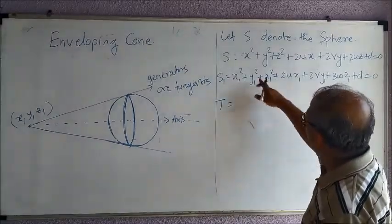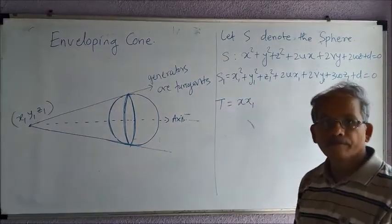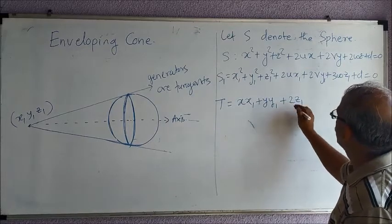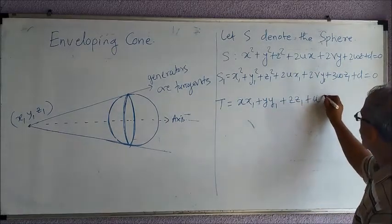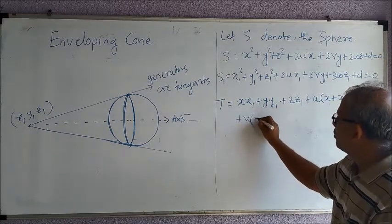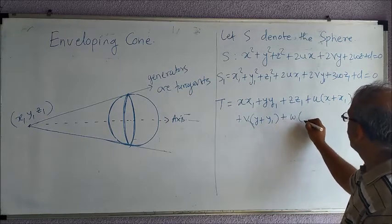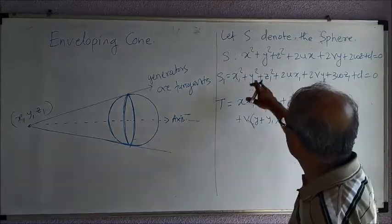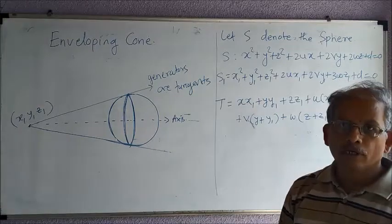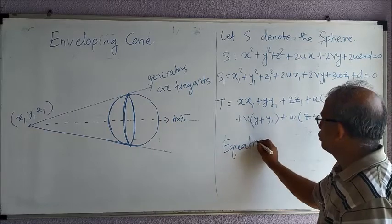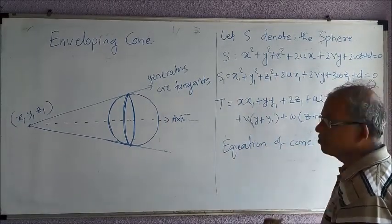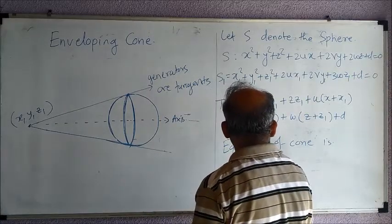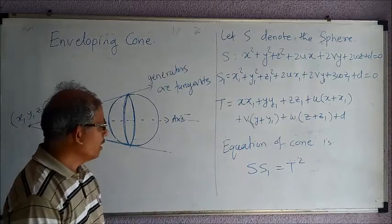Then we find T, the equation of the tangent plane. In place of x², write x·x1; in place of y², write y·y1; in place of z², write z·z1. Then plus u(x + x1) + v(y + y1) + w(z + z1) + d. The equation of the enveloping cone is then given by S·S1 = T². Remember this formula.